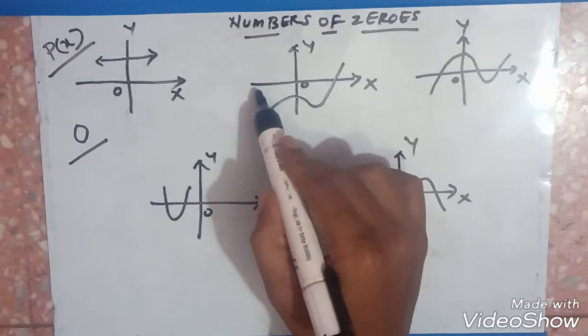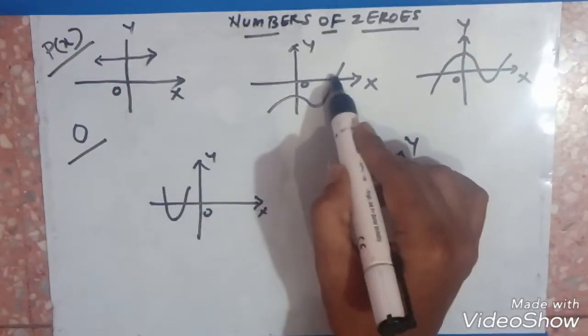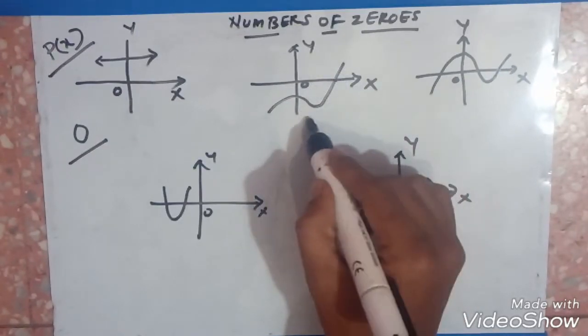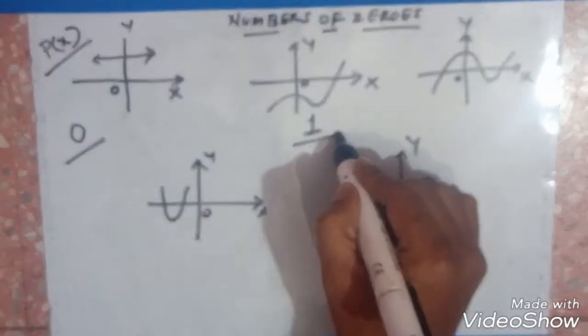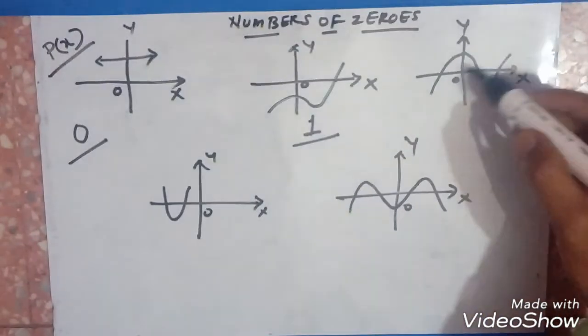Coming to the second graph, if you check the x-axis, it is intersecting at this point. The answer is 1. The number of zeros is 1.